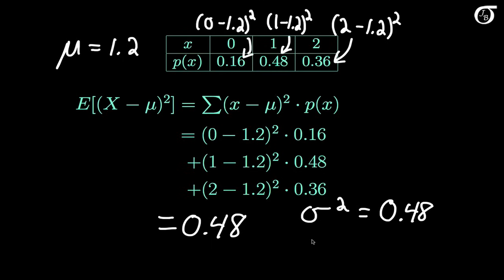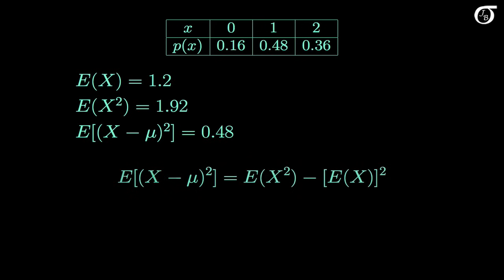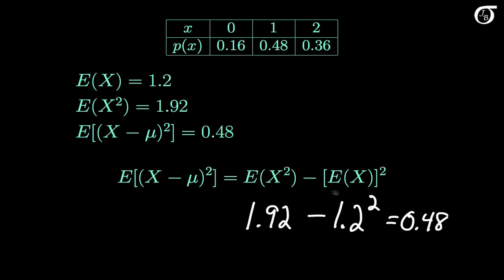If we want the standard deviation of the random variable X, represented by sigma, that's simply the square root of 0.48. Here's a recap of the three expectations we just calculated. Let's verify the relationship: the expectation of x squared is 1.92, and if we subtract the square of the expectation — subtract 1.2 squared — we get 0.48, which is indeed the expectation of (x minus mu) squared that we found. So this relationship holds here, as it is true in general.